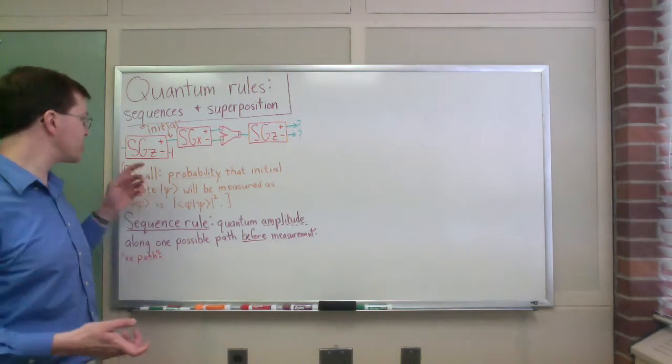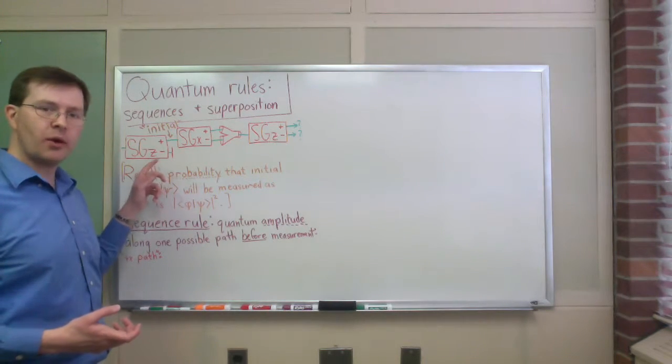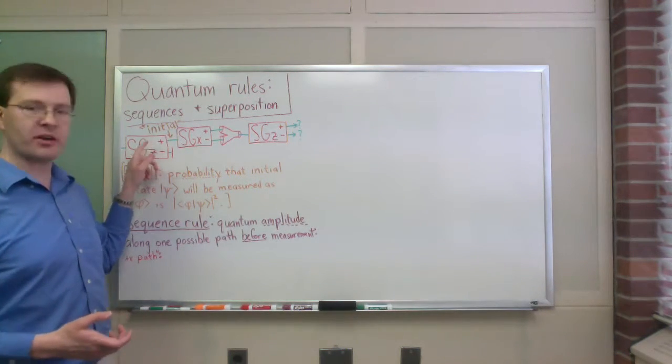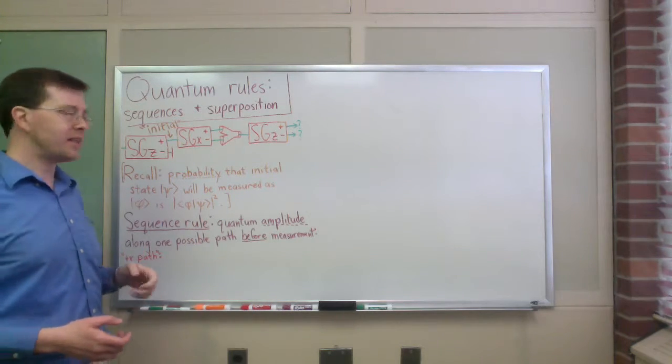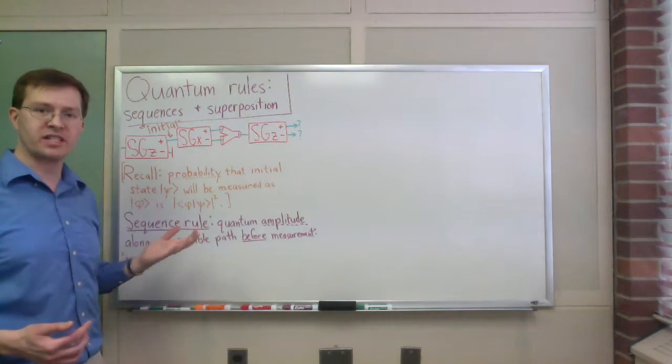We're going to start out with a Stern-Gerlach device oriented in the z-direction. And we're going to just select the beam coming out of the plus z side of that. That will be our initial state for our later discussions.